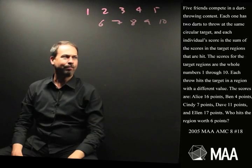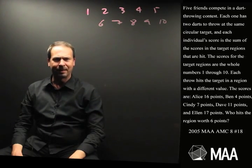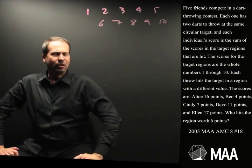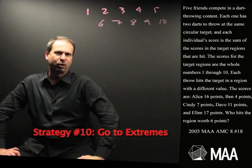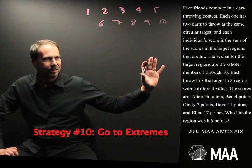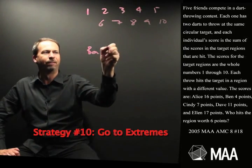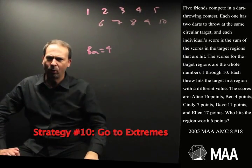Well, I look at these scores. Ben. Ben sticks in my mind. 4 points. So let's do strategy number 10, which is to go to extremes. Let's go to the most extreme score I see there. Ben got 4 points.